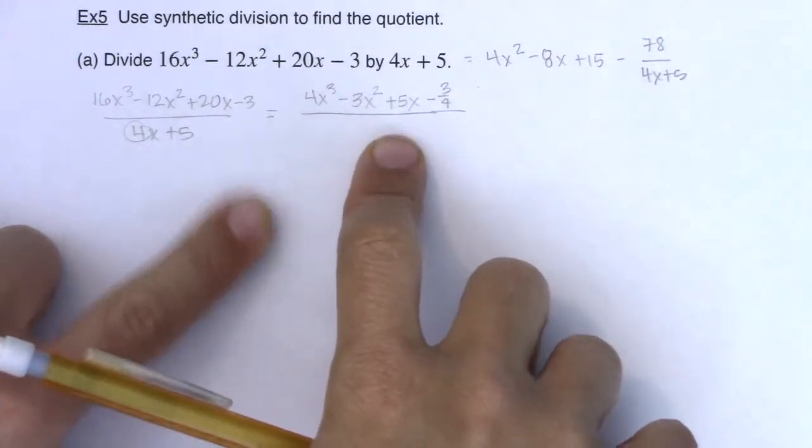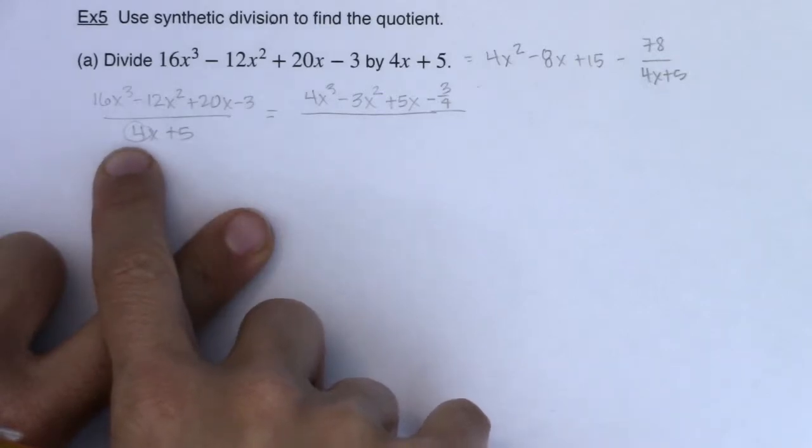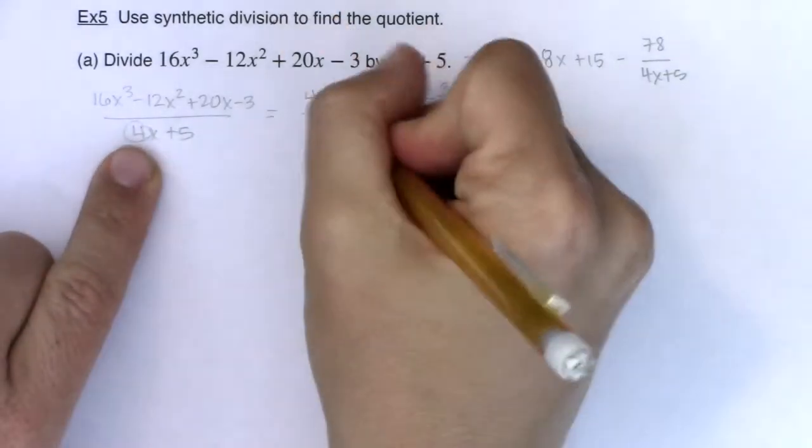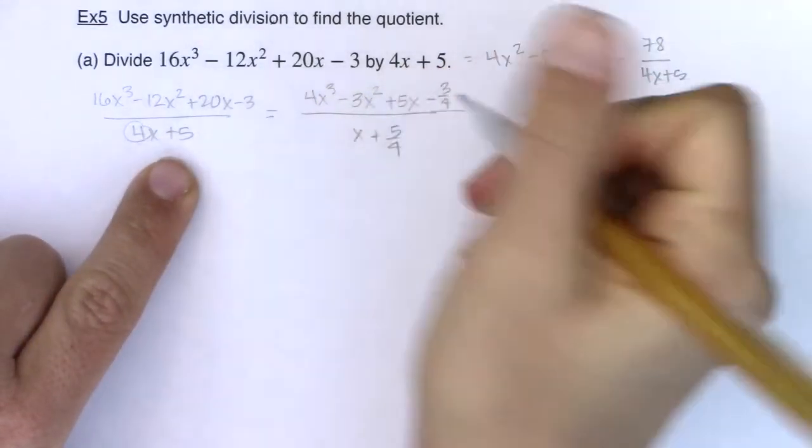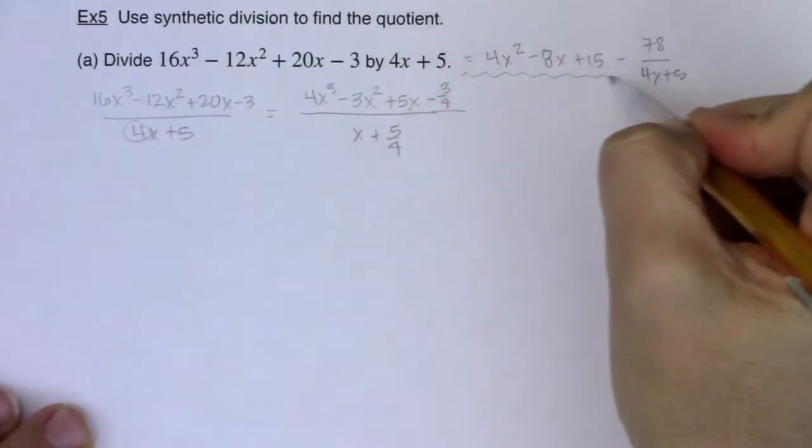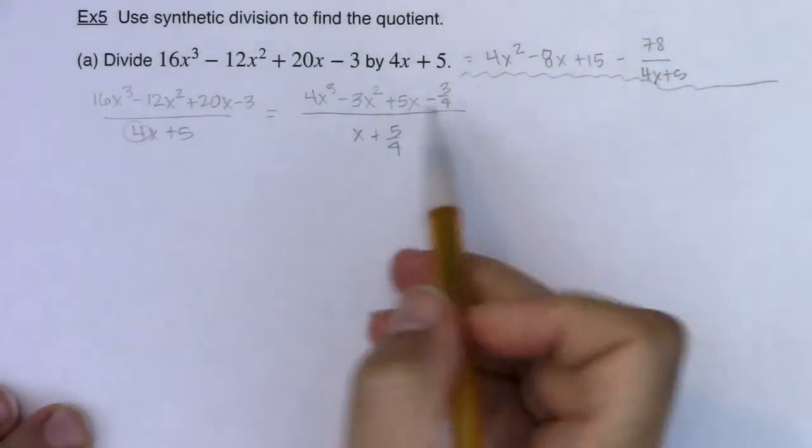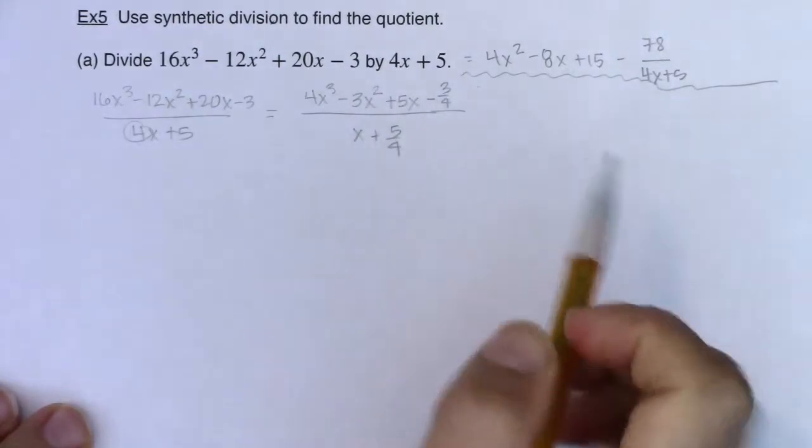That's the downside to using synthetic division when you have a binomial in your denominator where the lead coefficient isn't 1. All right, if I divide 4x by 4, I'm going to get x, and then 5 by 4, I'm going to get 5 fourths. At this point, let me put a little separation here. At this point, I'm ready to go. I have descending powers of x, and I haven't skipped over any.